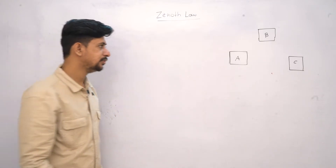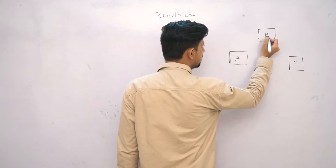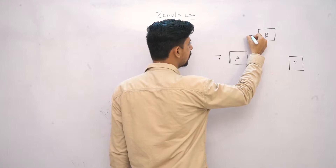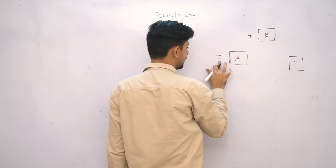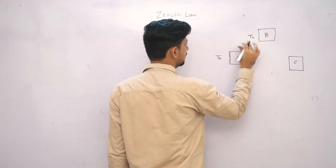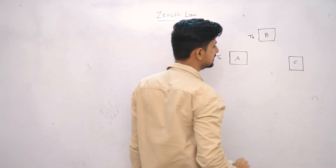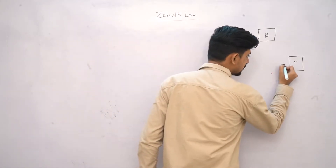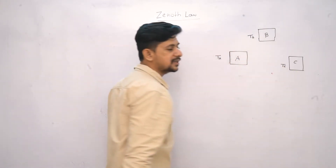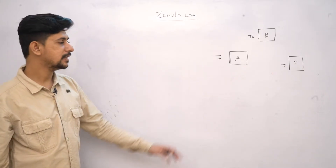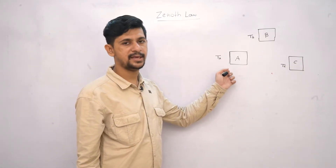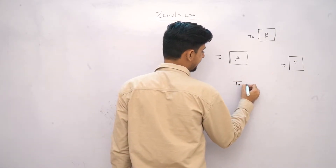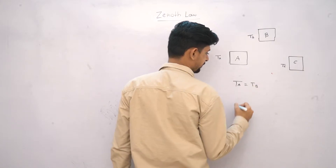As per the Zeroth Law, if body A and body B are considered — let's say the temperature of body A is T_A and the temperature of body B is T_B — the first condition is that the temperature of body A equals the temperature of body B, that is T_A equals T_B.